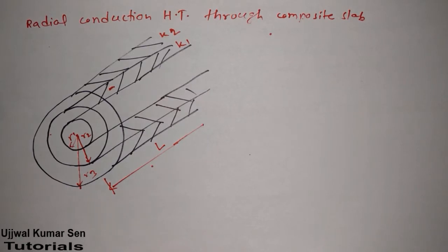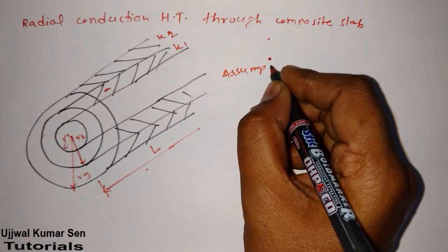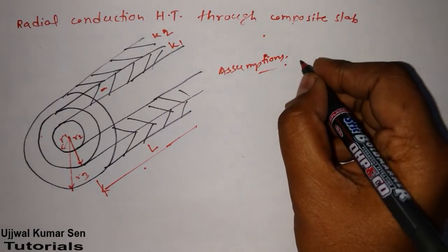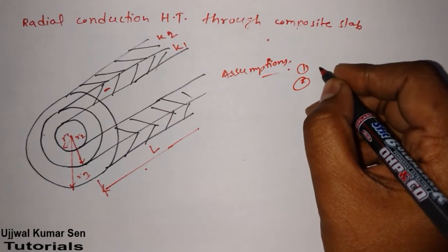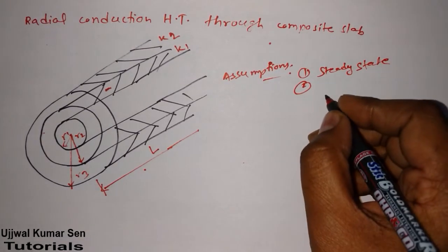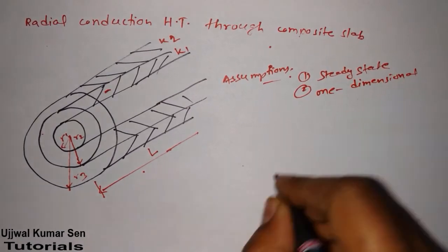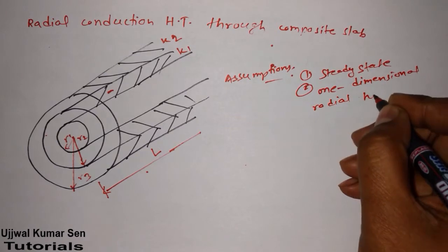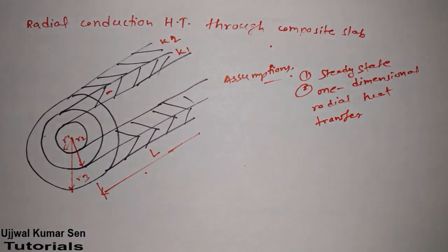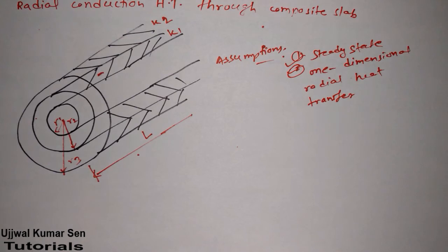Now, what exactly are we assuming here? We are taking two assumptions. One is steady state condition, and the second is one-dimensional radial heat transfer. That's it — we are assuming only these two things: steady state and one-dimensional heat transfer.